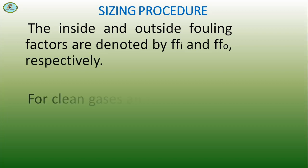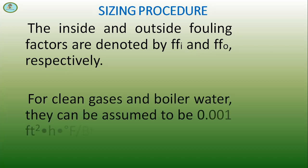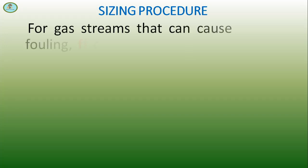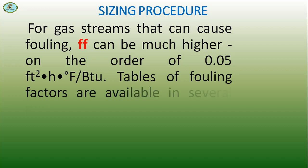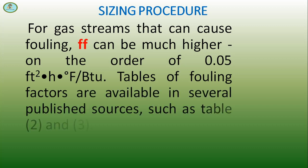For clean gases and boiler water, they can be assumed to be 0.001 ft² hr °F/BTU. For gas streams that can cause fouling, FF can be much higher, on the order of 0.005 ft² hr °F/BTU. Tables of fouling factors are available in several published sources such as tables 2 and 3.